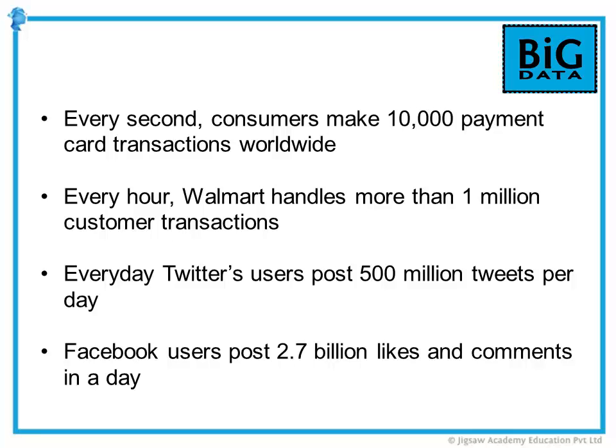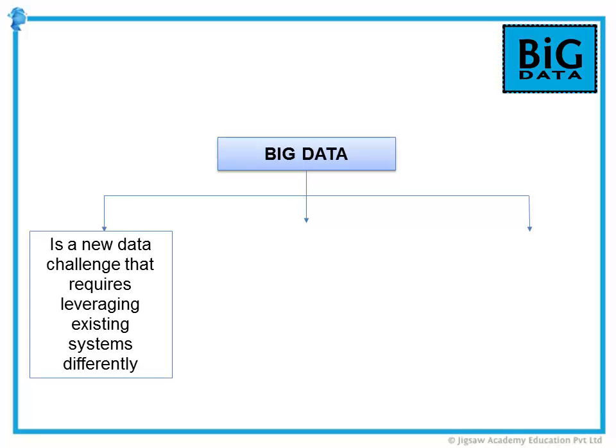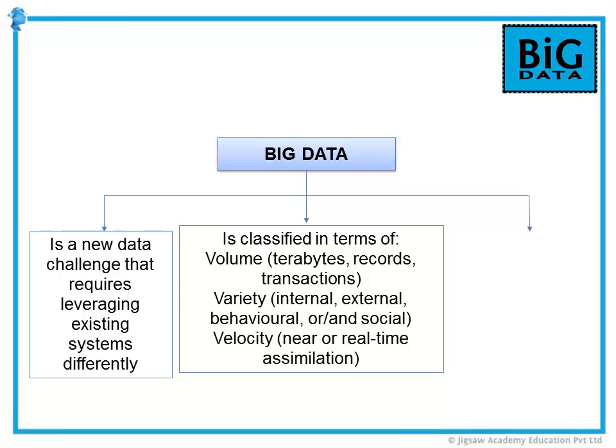Earlier, due to lack of access and the means to process data, the potential of Big Data remained mostly untapped. There are three main factors to consider when talking about Big Data. First, it's a new kind of data — a challenge since it requires leveraging different systems differently. Second, it is classified in terms of volume, variety and velocity. Volume refers to the amount of data, whereas variety refers to the type — internal or external, or behavioral or social. The third classification, velocity, refers to its assimilation: how near or real-time is it? We will look at these concepts in more detail in later classes.